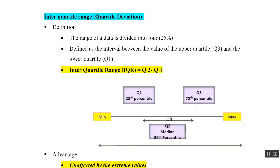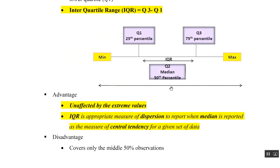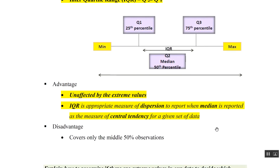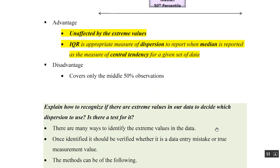IQR is defined as the interval between the upper quartile and lower quartile, that is Q3 minus Q1. It is unaffected by extreme values and is the appropriate dispersion measure to report when median is reported as a measure of central tendency. Its disadvantage is that it covers only the middle 50 percent of observations.